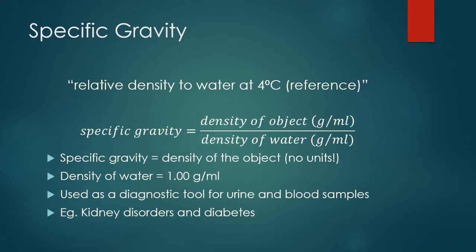Let's talk about specific gravity. Specific gravity is the relative density compared to water — it's a unitless number for density. To calculate it, you take the density of an object in grams per milliliter and divide it by the density of water, also in grams per milliliter. Since water's density is one, you're dividing by one, so the number doesn't change — but the units cancel out, leaving a dimensionless value.